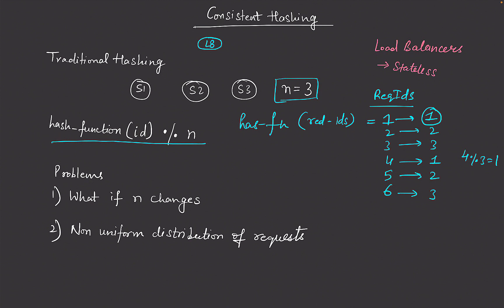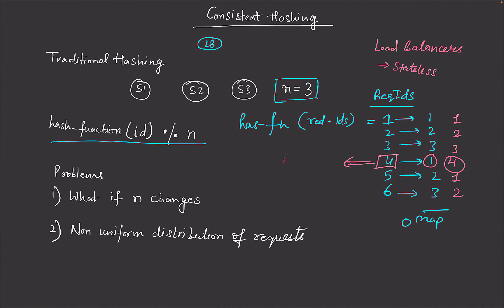Now let's say we have four servers. These are the original mappings. After adding the fourth server, request one goes to server one, request two goes to server three, request three goes to server four, request four goes to server one, request five goes to server two. Basically, all the requests which were earlier going to server one are now going to server four, so all data for request IDs whose hash is four must be moved from server one to server four. Similarly, hash five must move from server two to server one, and hash six from server three to server two.